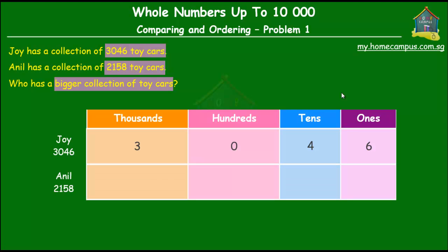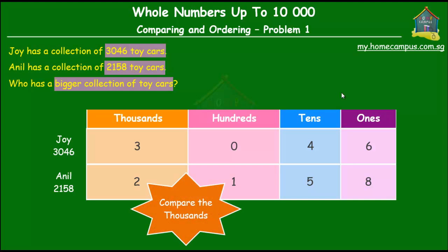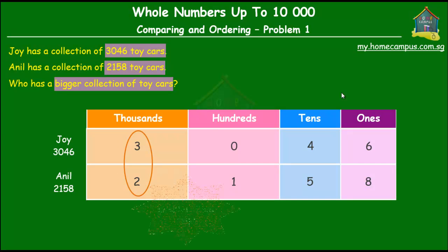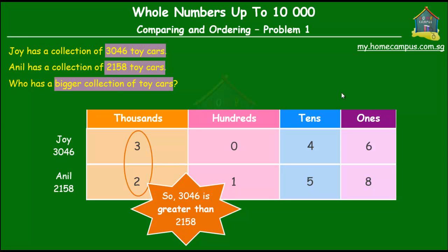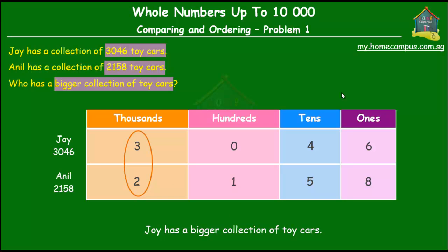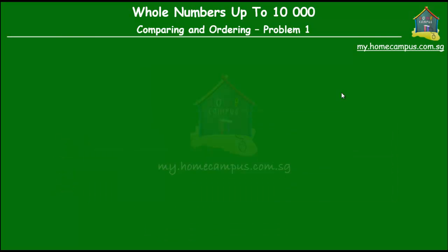Anil has 2,158 cars. To find out who has a bigger collection of toy cars, we compare the thousands place digits. In the thousands place, Joy has 3 and Anil has 2. So quite simply, 3,000 is greater than 2,000, and therefore 3,046 is greater than 2,158. Hence, Joy has a bigger collection of toy cars.